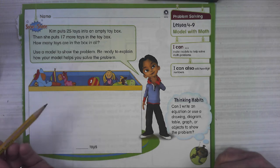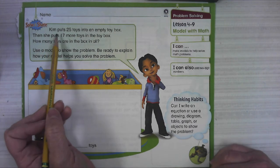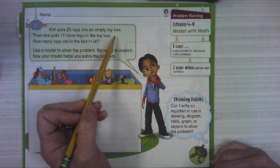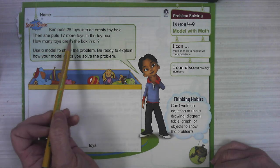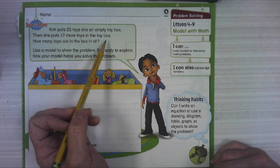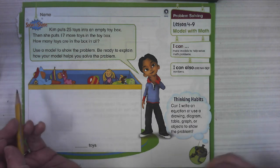So I'm gonna read the problem first and then we'll talk about what the problem is looking for. Kim puts 25 toys into an empty box, then she puts 17 more toys in the toy box. How many toys are in the box in all?